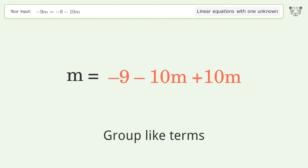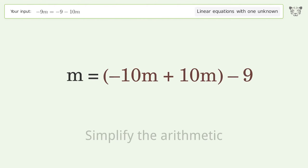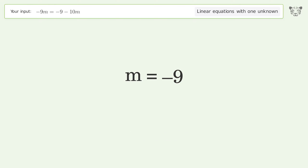Group like terms. Simplify the arithmetic. And so the final result is m equals negative 9.